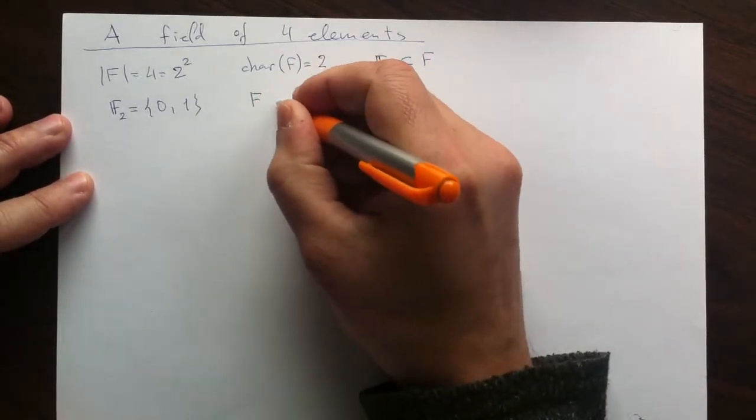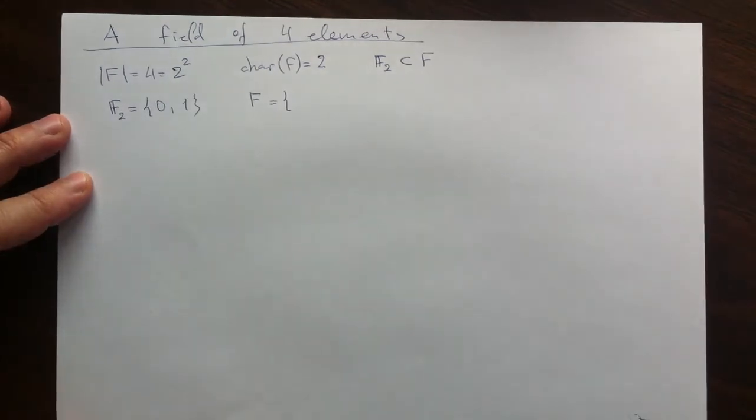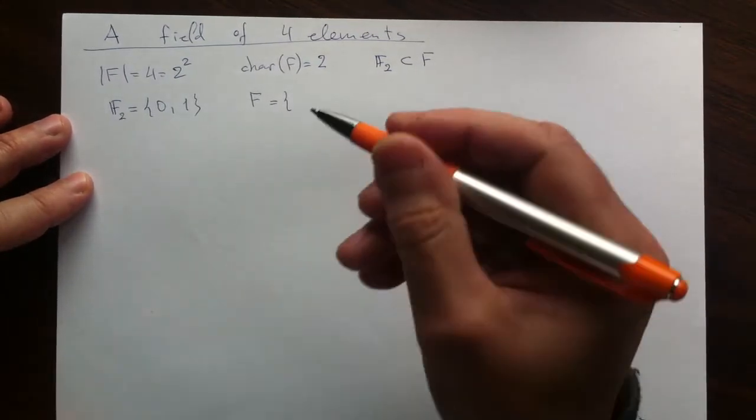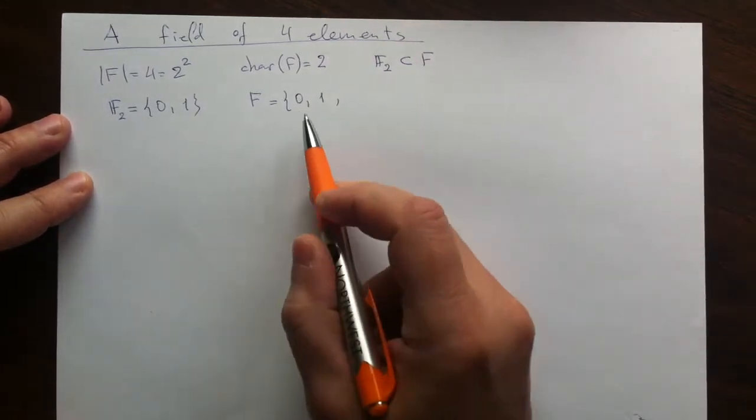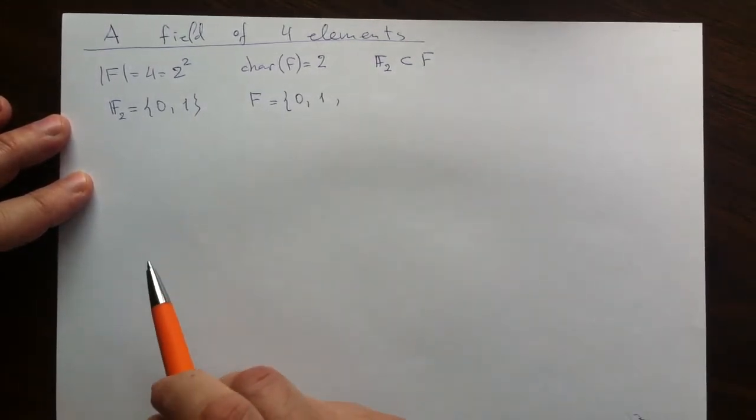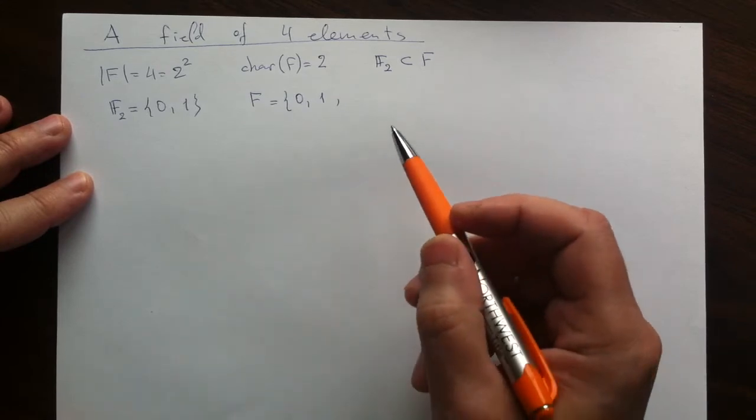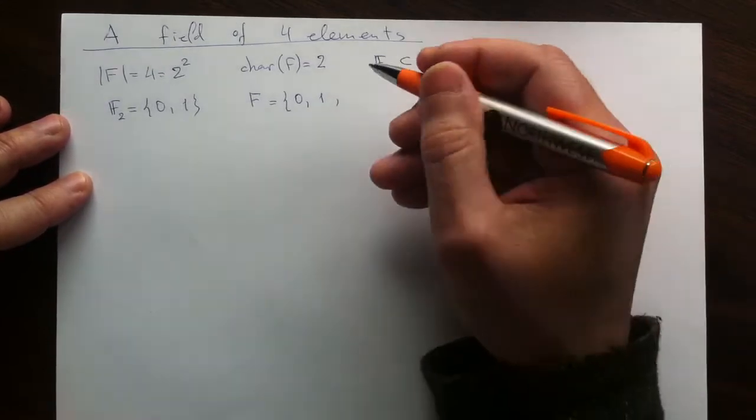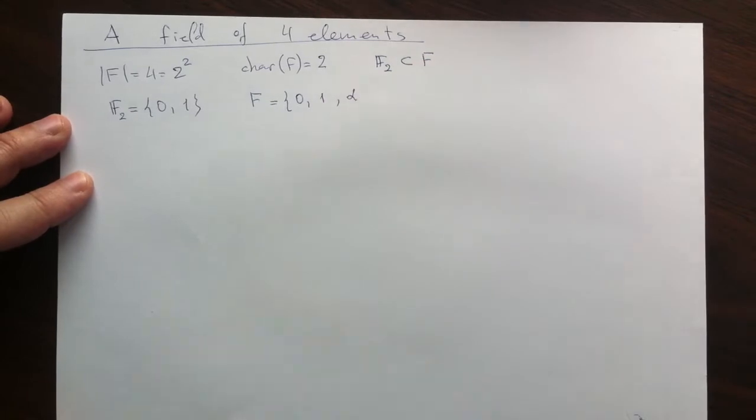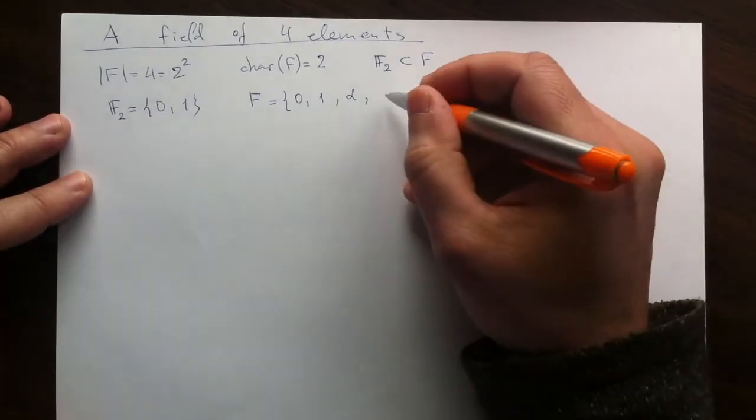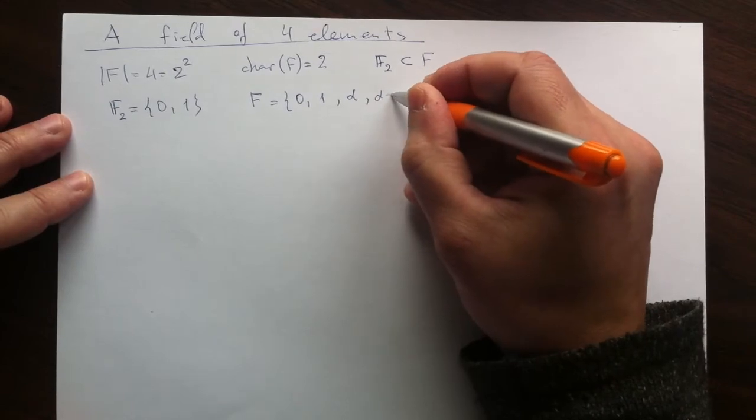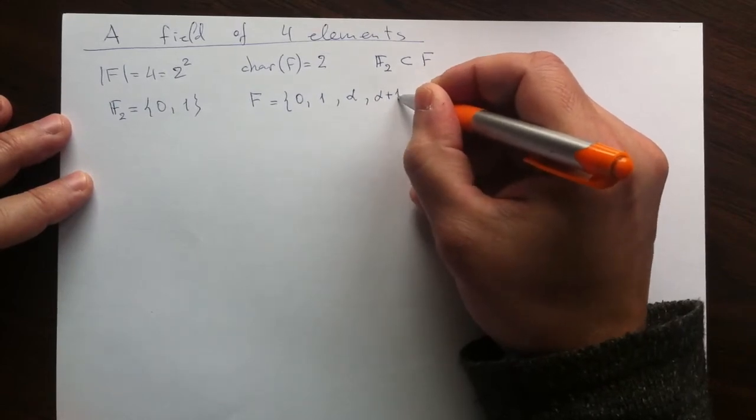So we could start writing explicitly elements of our field of 4. So there will be 0, there will be 1. And all arithmetic operations close on these two, so we can't get anything new out of these two by doing arithmetic operations. So we'll have to introduce a name for the next one in the list of four. Let's call it alpha. And the next we call beta, but we don't have to, because we can be sure that the next one we can make out of alpha and 1 during addition.